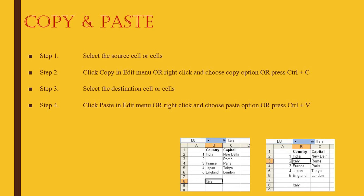Copy and paste: if you copy something — for example, Italy from cell B8 (column letter followed by row number is a cell's name) — you use Ctrl+C to copy. Then go to the destination and press Ctrl+V to paste. Alternatively, use the Edit menu or right-click for copy and paste options. Note it is not Ctrl+P — V is for pasting.